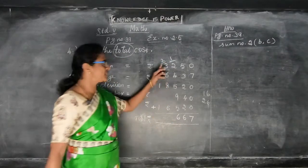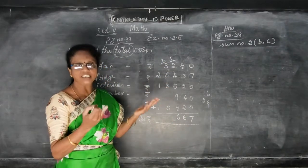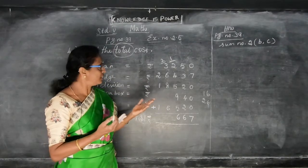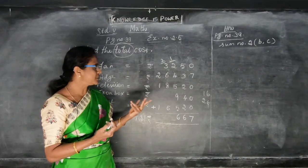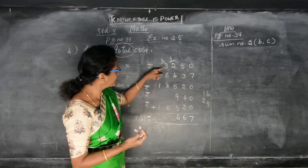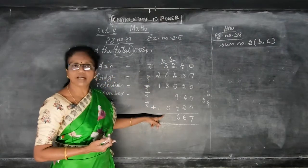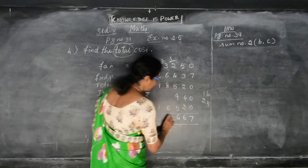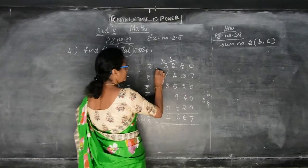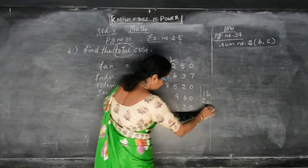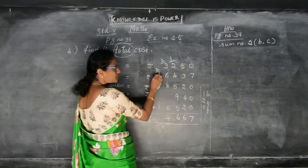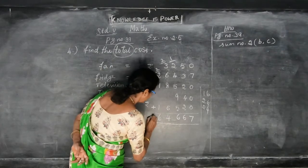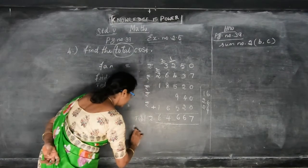3 plus 2 is 5. 5 in the mind and 6 in the fingers — gives you 11. 11 in the mind and 8 in the fingers: after 11 — 12, 13, 14, 15, 16, 17, 18. 19 in the mind and 5 in the fingers: 20, 21, 22, 23, 24. So put 4 and carry 2 over. 2 plus 2 is 4, plus 1 is 5, plus 1 is 6. This is the total amount Rama spent for household expenses.